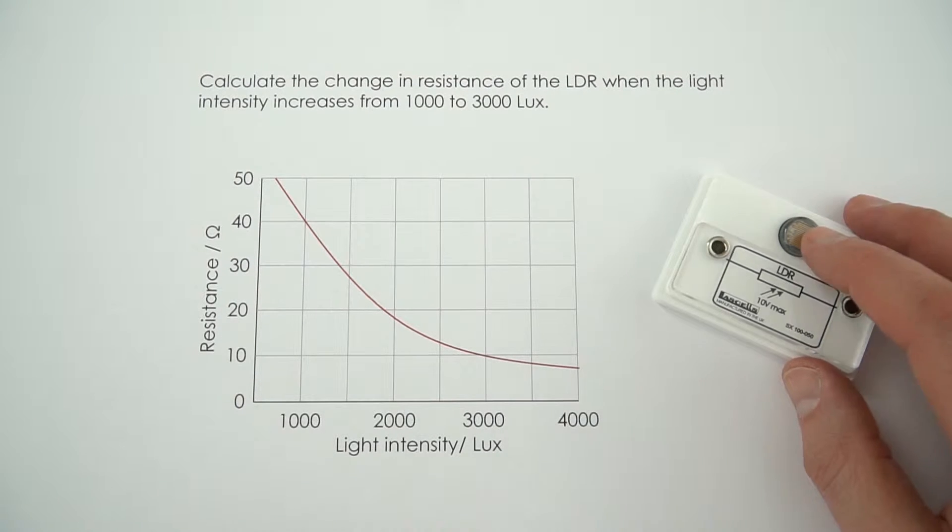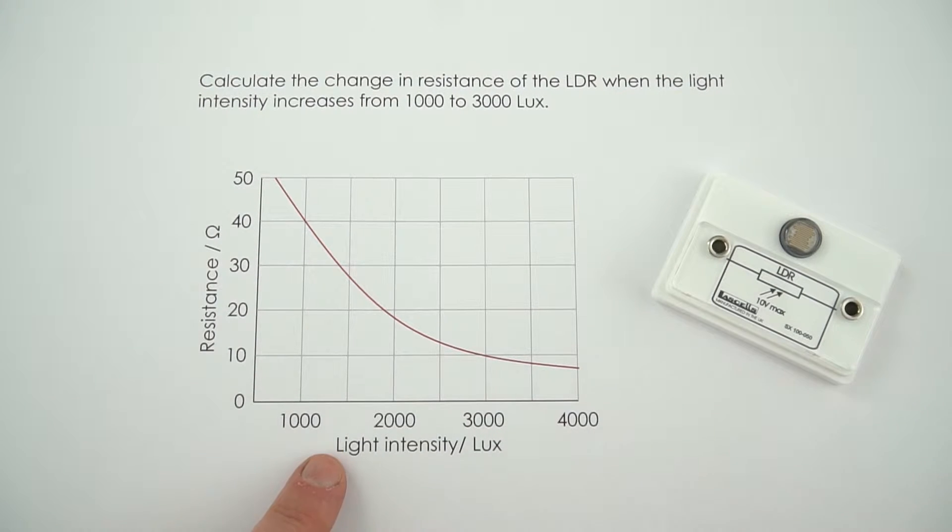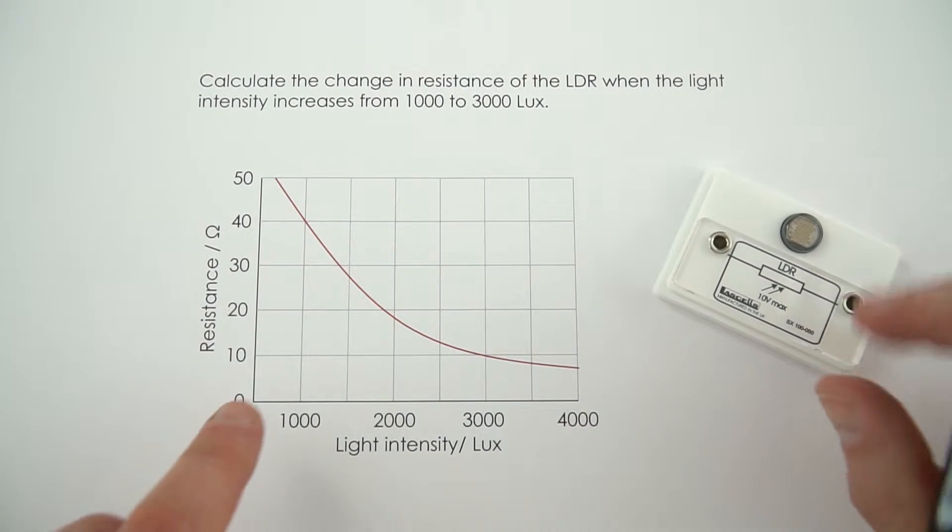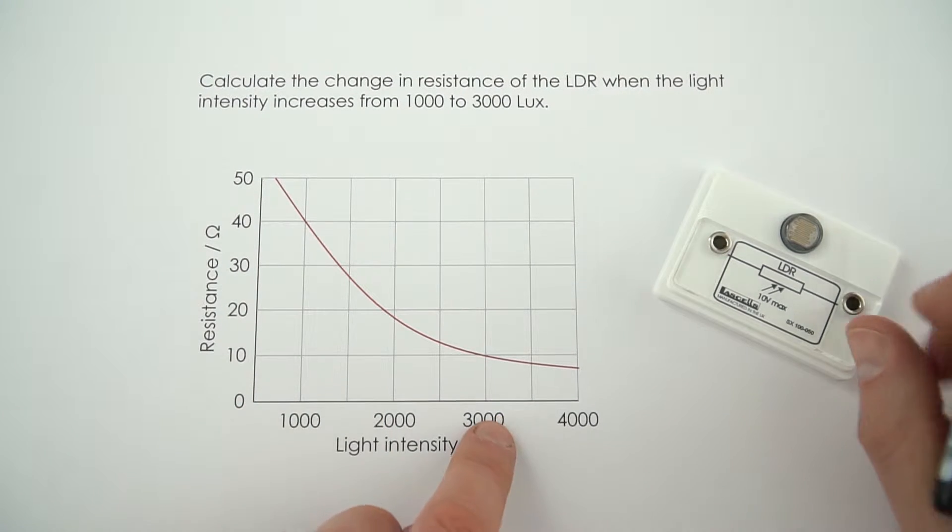So in this example here, we've got an LDR, and as the light intensity increases, its resistance decreases. Now we need to work out the change in resistance when the light goes from 1000 up to 3000 lux.